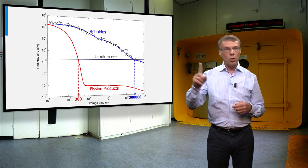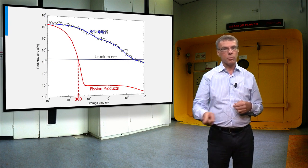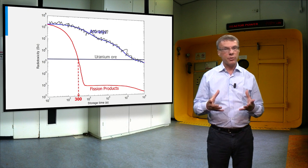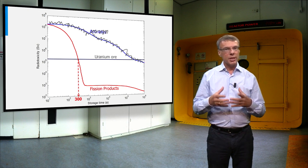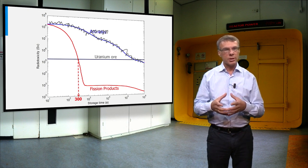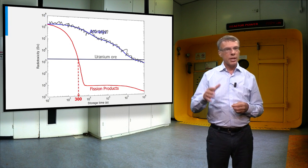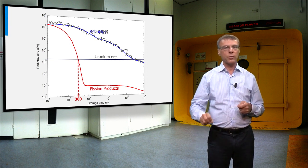In the molten salt reactor, all actinides keep on recycling in the molten salt until they have been fissioned. This means the actinides will not be present in the spent fuel from a molten salt reactor, leading to much shorter lived nuclear waste.